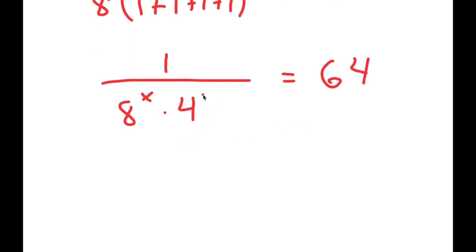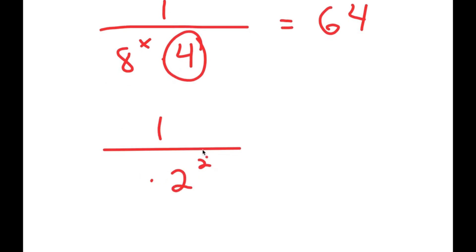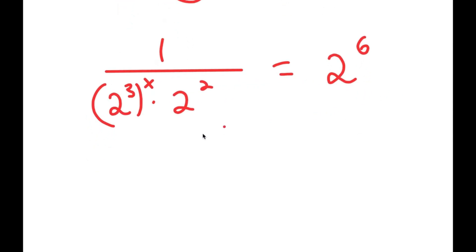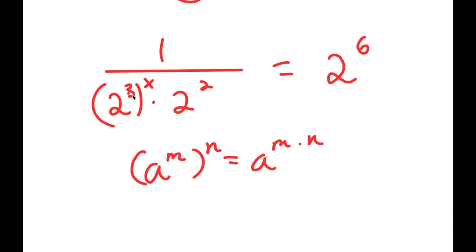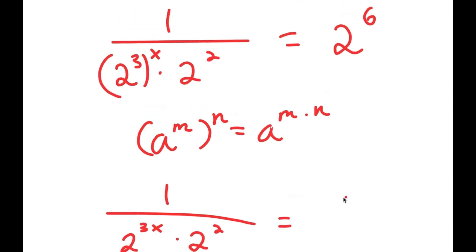I'm going to rewrite all terms as powers of 2. So 4 is equal to 2 squared. 8 is 2 to the power of 3, so I have 2 to the power of 3 to the power of x. And 64 is 2 to the power of 6. Using the rule a^m^n = a^(m×n), 2 to the power of 3 to the power of x equals 2 to the power of 3x. So I have (2^(3x)) times 2 squared equals 2 to the power of 6.